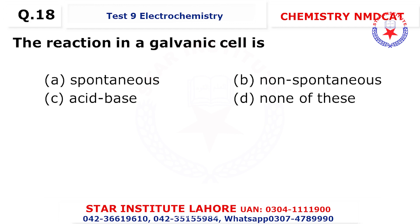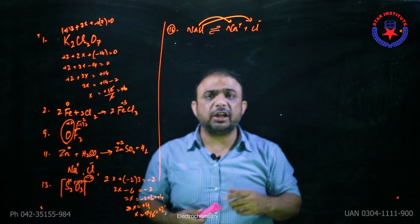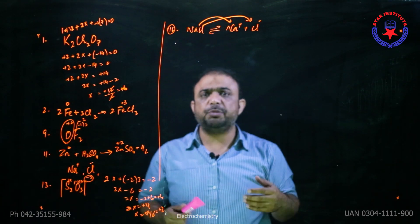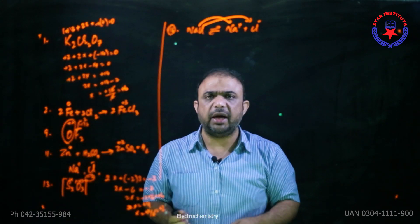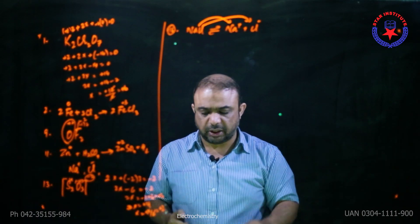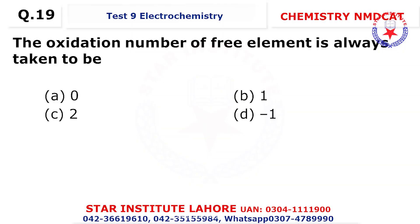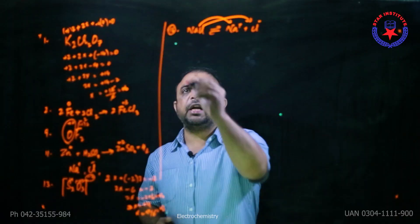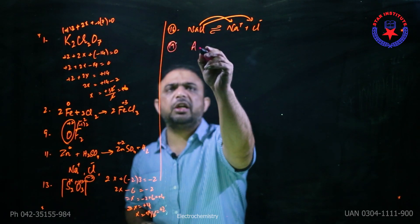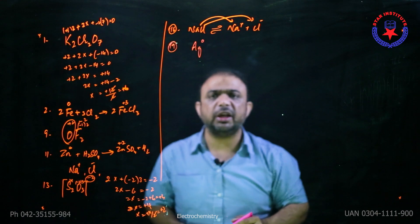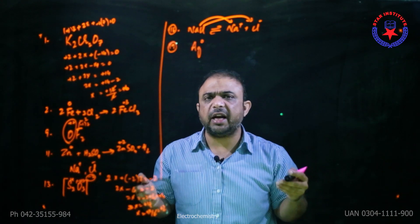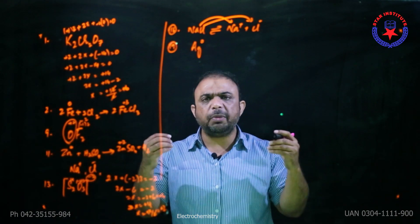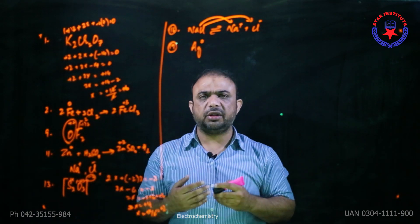Question number 18: the reaction in the galvanic cell is always a spontaneous reaction because it produces electricity. The flow of electrons happens due to the potential difference between the two electrodes, so it is an example of a spontaneous reaction. Question number 19: the oxidation number of free elements is taken to be zero, because in elemental form the number of protons equals electrons, and since positive and negative charges are equal, the net value is zero — any neutral atom always has zero oxidation state.